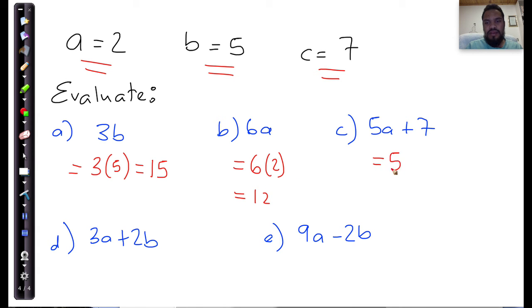And this one, I'm going to say 5 multiplied by the value of a, which is 2, plus 7. And I do the multiplication first. 5 times 2 is 10. 10 plus 7 is 17. And that's going to equal to 17.